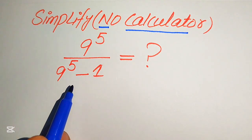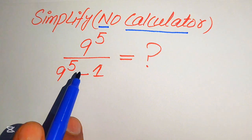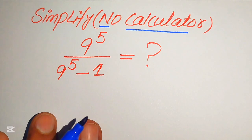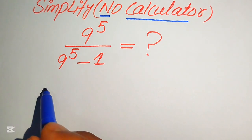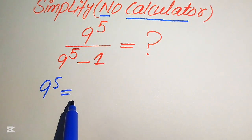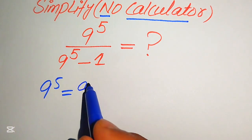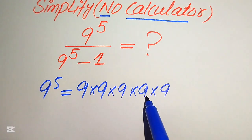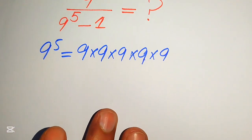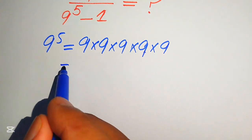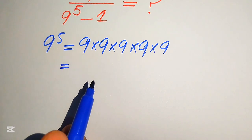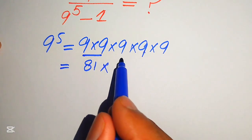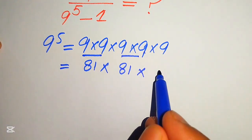If you focus on the question, we have 9 to the power of 5. First we focus on computing 9 to the power of 5. The meaning of 9 to the power of 5 is that we multiply 9 by itself 5 times. These are bigger calculations, but we can do them in our mind without using a calculator. So 9 times 9 becomes 81, multiplied by another 9 times 9 is also 81, and here we have the remaining 9.